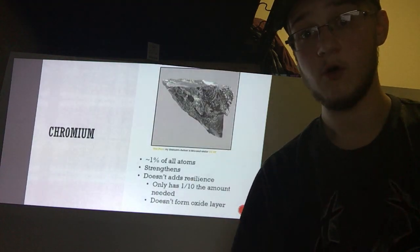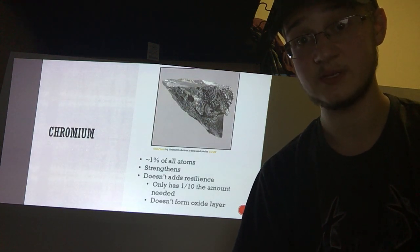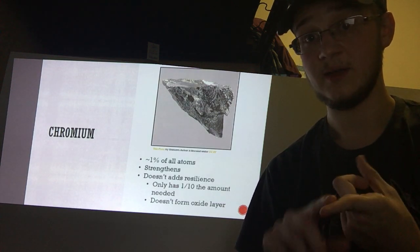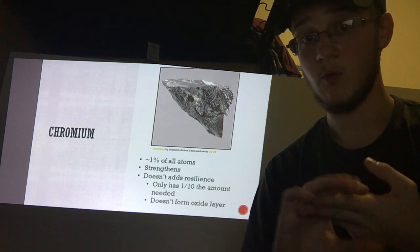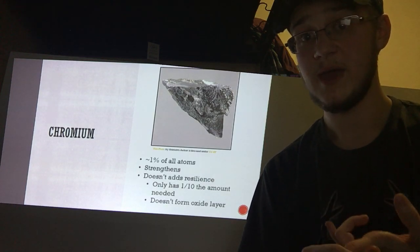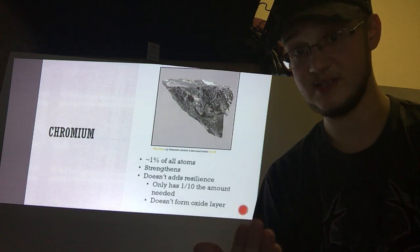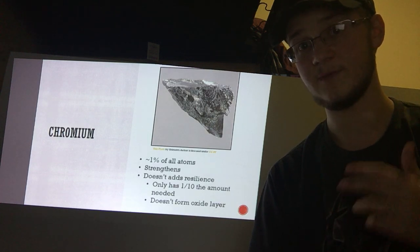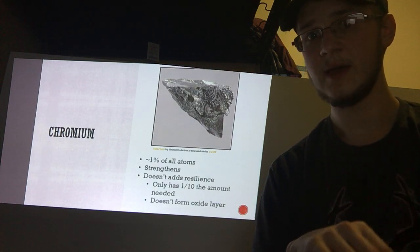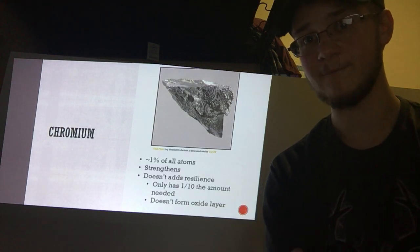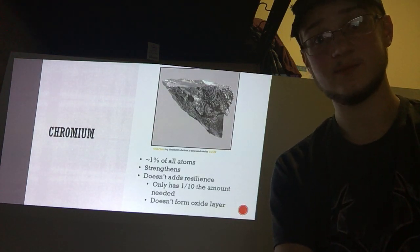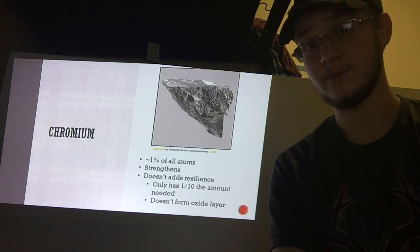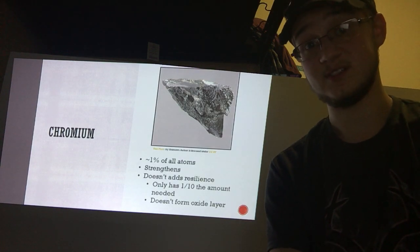The second largest holds one percent of the atoms, which is chromium. Chromium is added to either add strength or to give the material a resistance to corrosion and rust. It does this by forming an oxide layer on the outside of the material that stops oxygen from reacting with the other materials inside — it creates a barrier of sorts. But for 4130 steel this isn't fully the case; it is added to strengthen the steel but only holds about one-tenth of the atoms needed to give it full resistance to rust and corrosion.